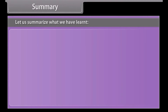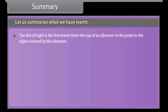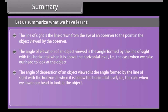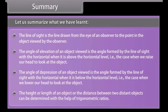Let us summarize what we have learnt. The line of sight is the line drawn from the eye of an observer to the point in the object viewed. The angle of elevation is the angle formed by the line of sight with the horizontal when the object is above the horizontal level — that is, when we raise our head to look at the object. The angle of depression is the angle formed by the line of sight with the horizontal when the object is below the horizontal level — when we lower our head to look at the object. The height or length of an object or the distance between two distant objects can be determined with the help of trigonometric ratios.